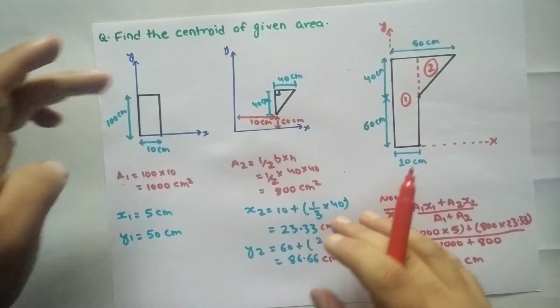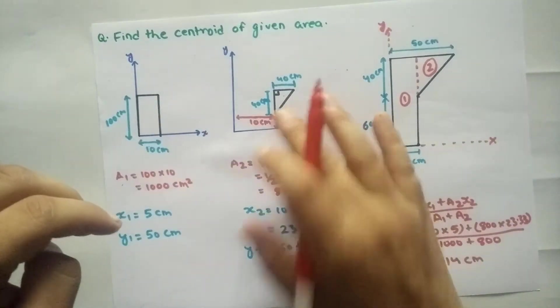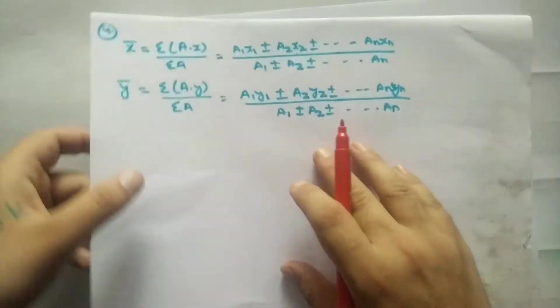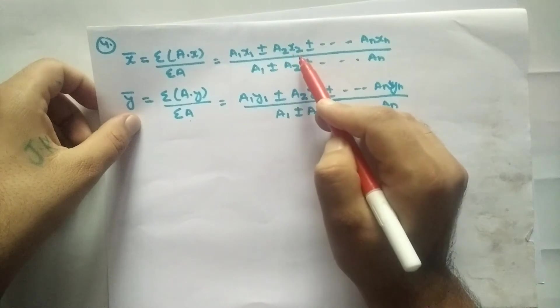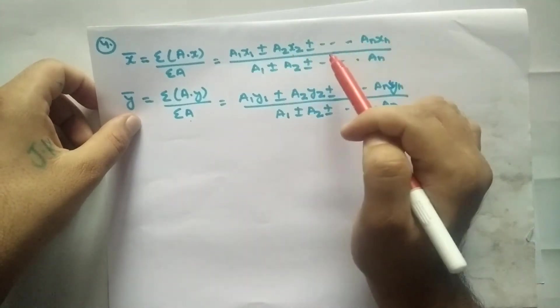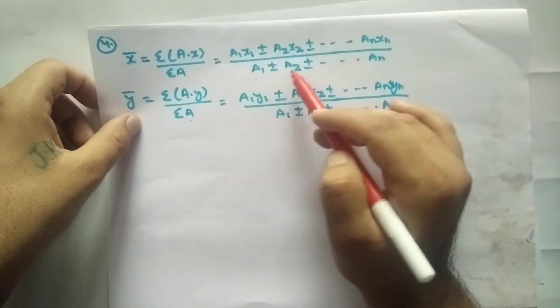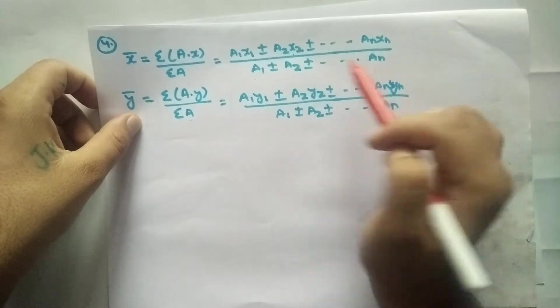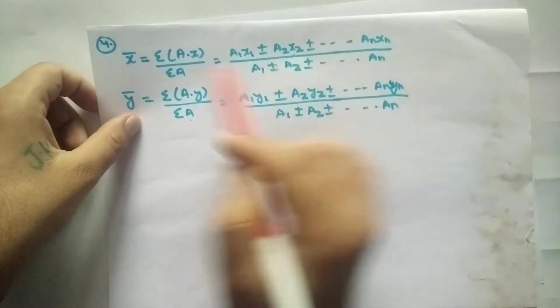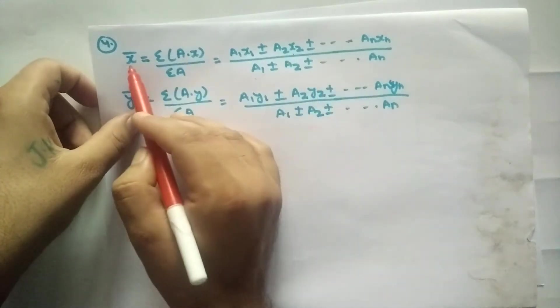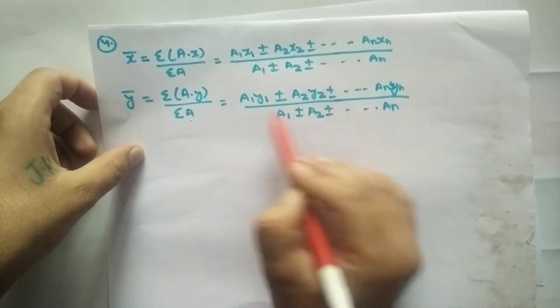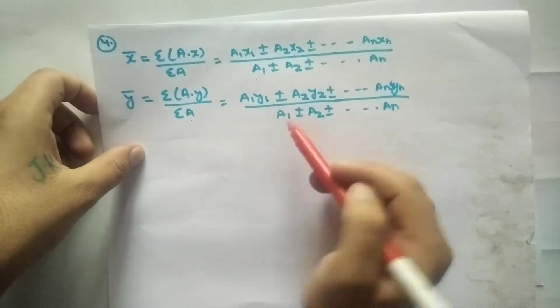This is the formula: A1 and X1, A2 and X2. It involves the area and X-coordinate for each part. X-bar is the centroid value in the x-direction, and Y-bar is the centroid value in the y-direction. This is the formula.